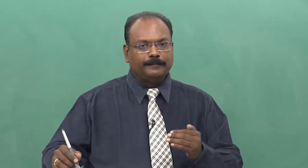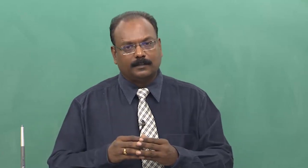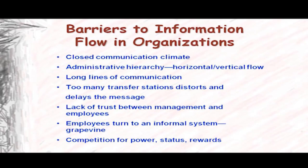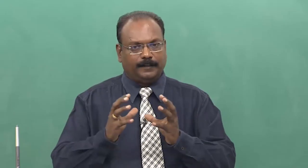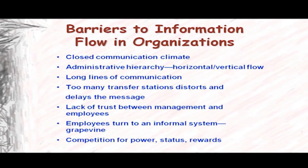When there is this flow of channels — upward, downward, horizontal — there will obviously be barriers to information flow in organizations. Why are barriers happening in companies? Most of the time it happens if the communication climate is closed, if people are not allowed to discuss issues freely, if there is no feedback taken from them, if they do not receive proper information, and if they have no clear idea of what they should be doing or how to execute their jobs.